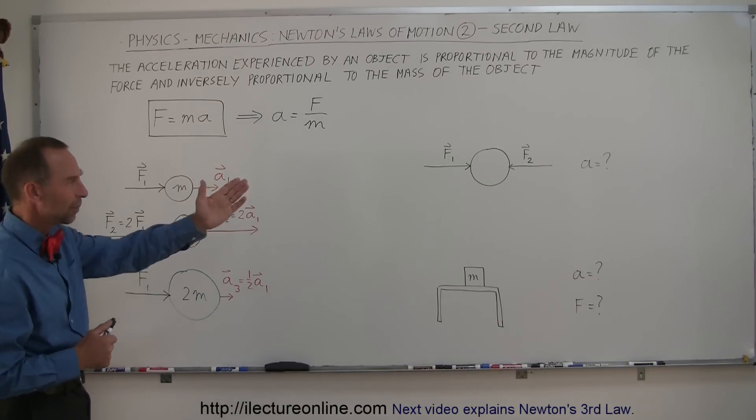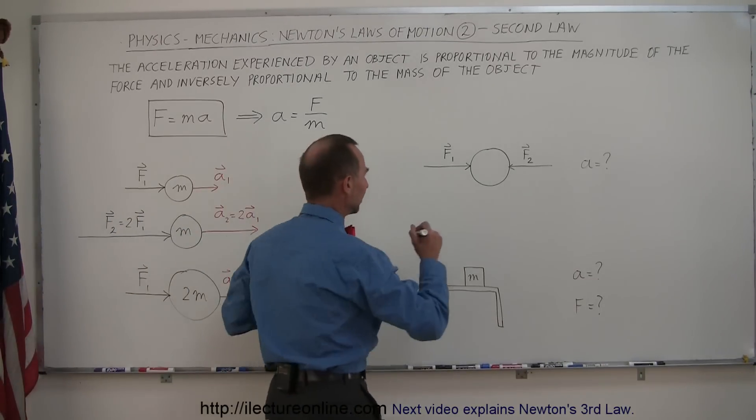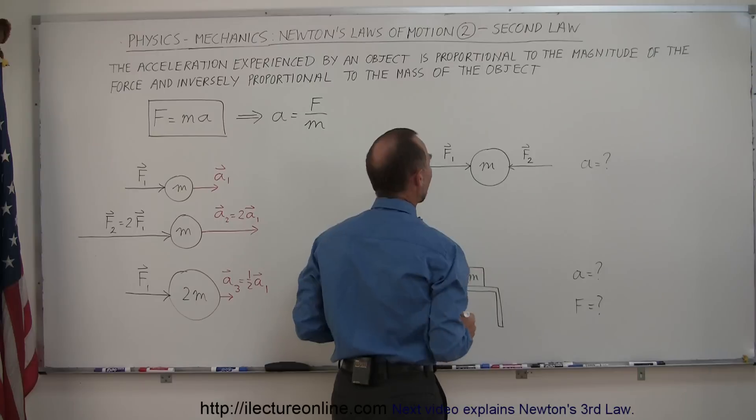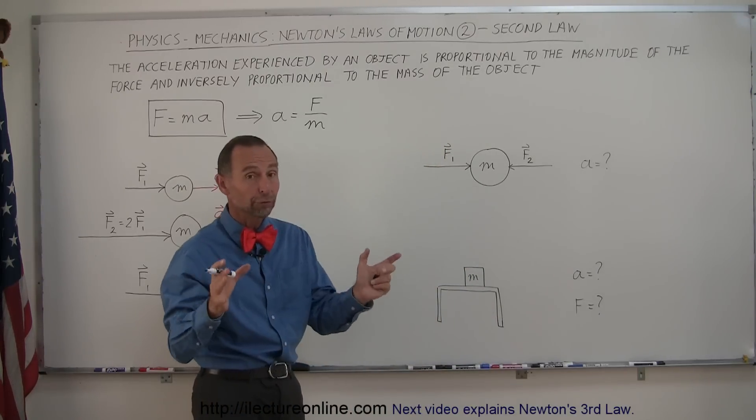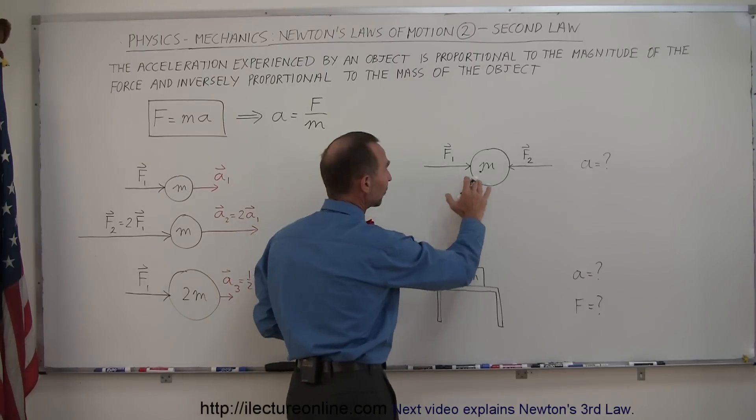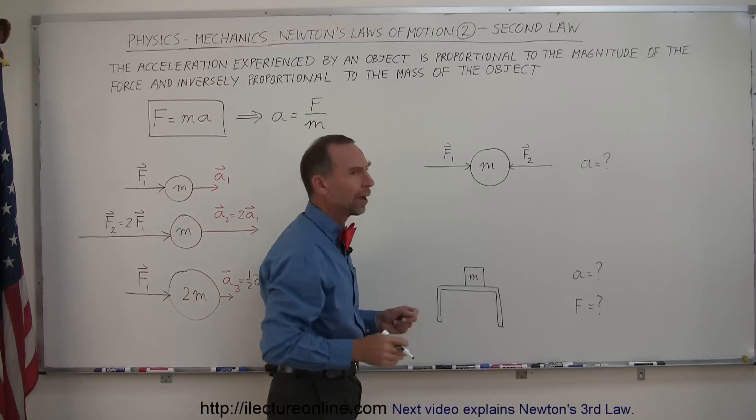But we need to understand this a little bit more. For example, let's say we have the same object right here, let's say it has mass m, and in this case it has zero acceleration even though there are two forces pushing on it—there's a force one pushing at it from the left, there's a force two pushing at it from the right.